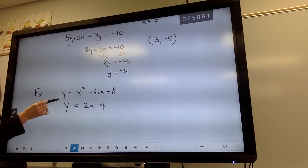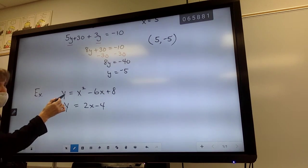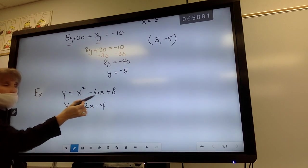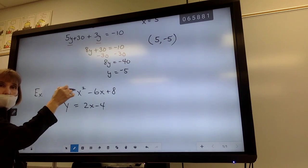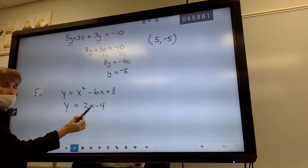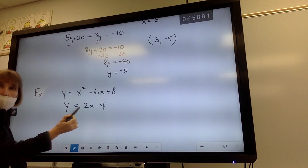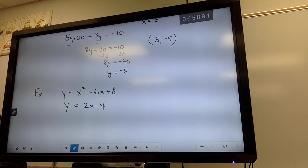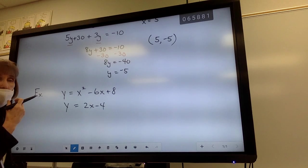We could graph these. What would the graph of the top equation look like? It's a parabola because that's a quadratic. So it would be a u-shaped graph. What would this graph look like? Linear. It's linear. It would be a straight line. So they might cross in one spot. They might cross in two spots. We'd have to find out. Okay. But we don't want to graph those. We want to use a different method.